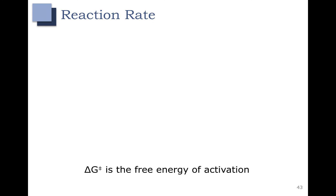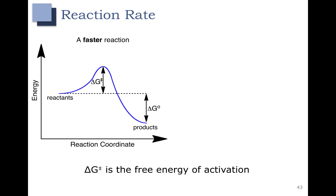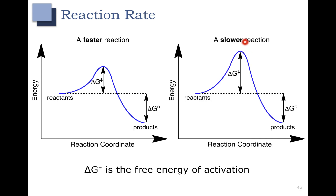Now let's talk about reaction rate. We're going to talk about delta G double dagger — it's the free energy of activation. You can see in this reaction that it is the energy required to get to the top of that hill, or the transition state. If we compare it to a slower reaction, you can see the delta G double dagger is bigger. In these examples, the energy of the reactants and the energy of the products are the same — both are exergonic reactions going downhill with a negative delta G naught, but the hump is different in height.